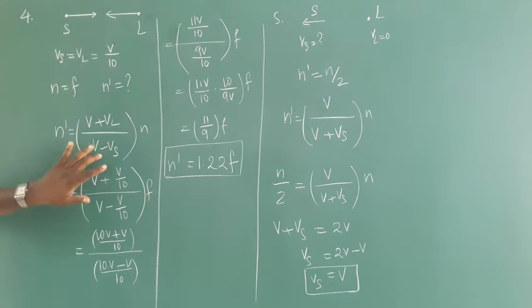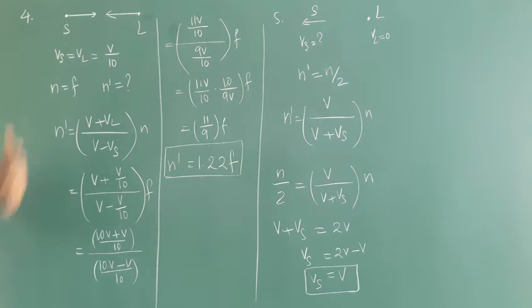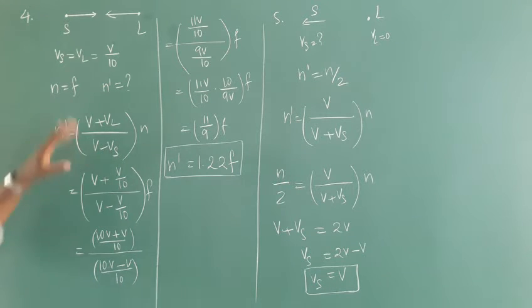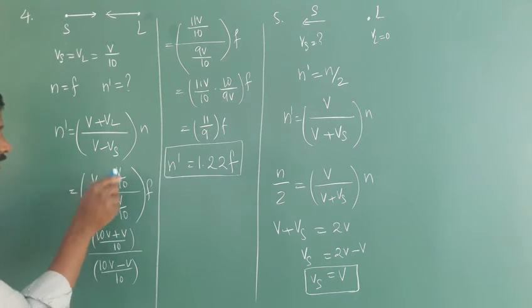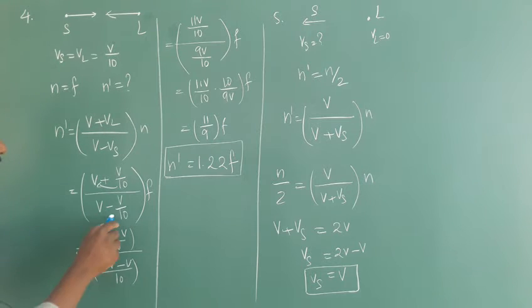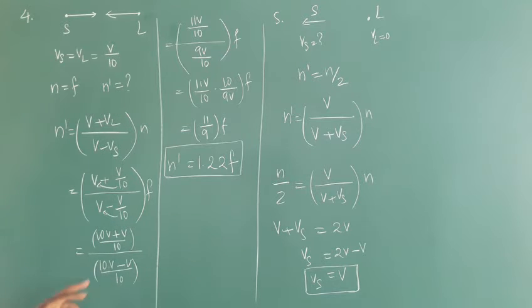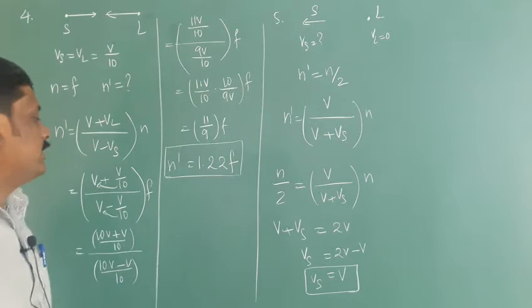The formula is N dash equals V plus VL divided by V minus Vs, times N. We know that VL and Vs are both equal to V by 10. So substituting VL and Vs as V by 10, we get V plus V by 10 divided by V minus V by 10, which simplifies to 10V plus V over 10, divided by 10V minus V over 10. That gives us 11V over 10 in the numerator and 9V over 10 in the denominator.